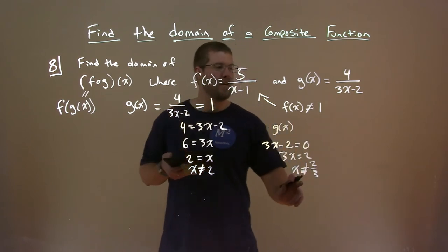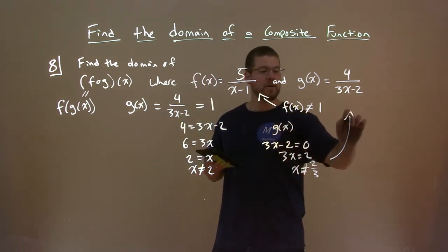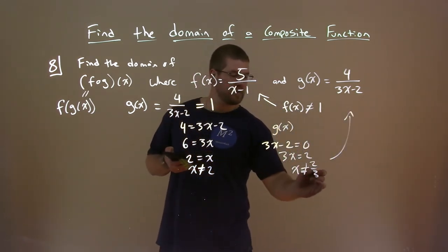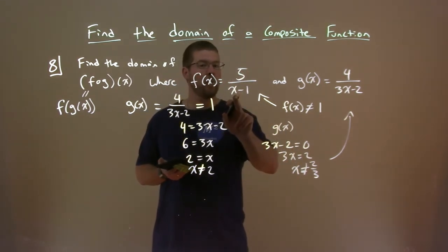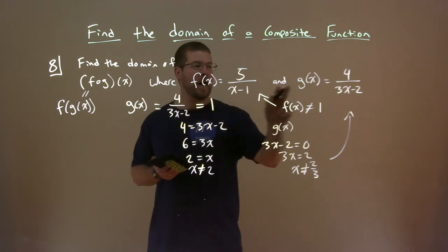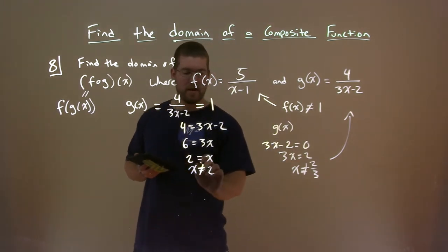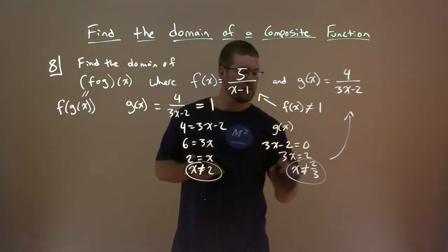Meaning, that for g of x, right here, x cannot equal 2 thirds. Then, the input value that causes this x to be 1, right, is the output of g of x. We have to find what that was, and that was not equal to 2.